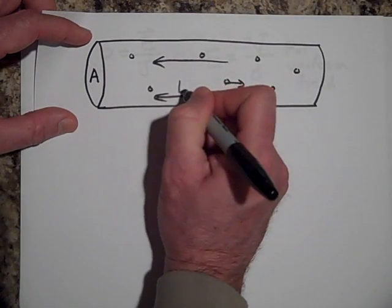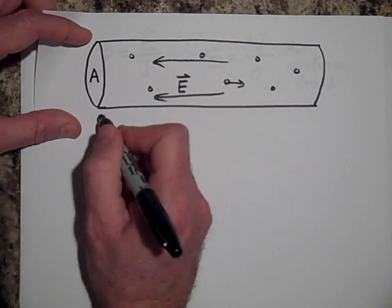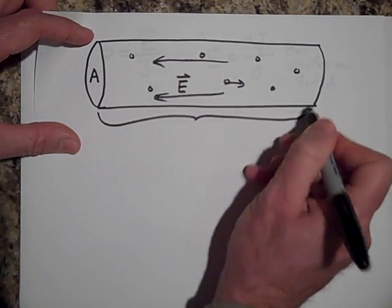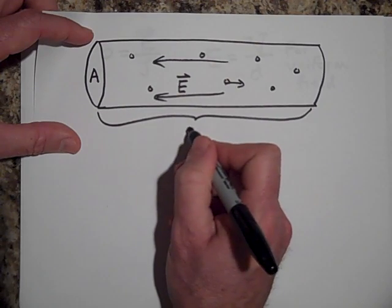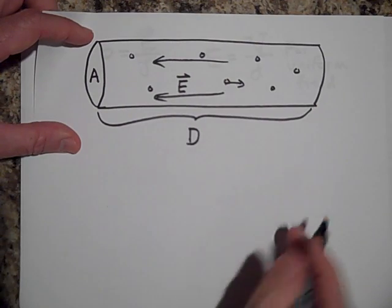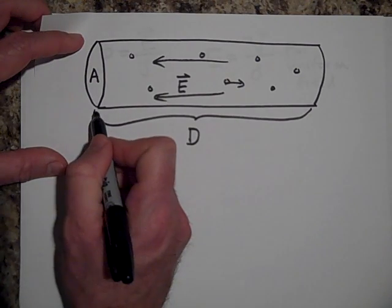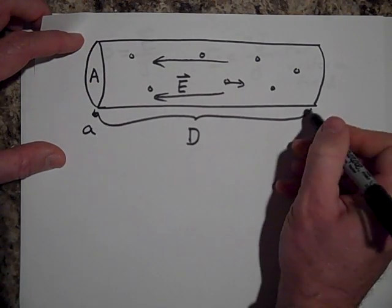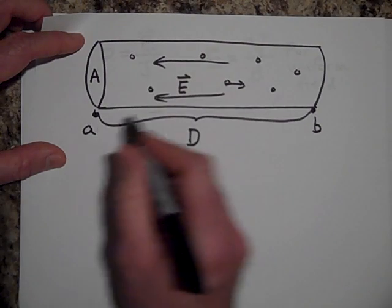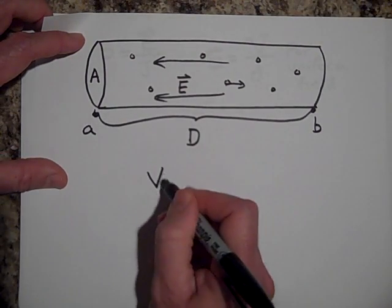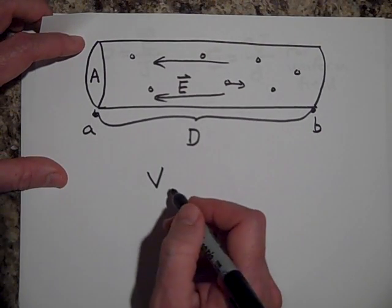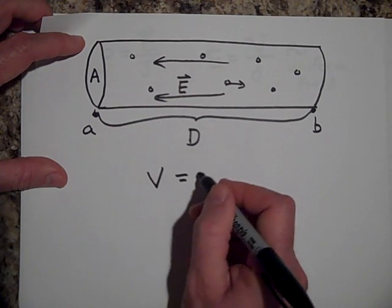If the electric field is this way and this distance we're going to call d, we'll call that an uppercase D I suppose, then the voltage between here, between A and B, the voltage between those two points is going to just be Ed.